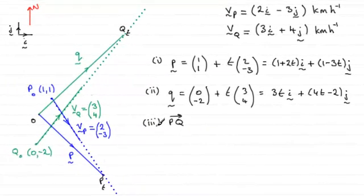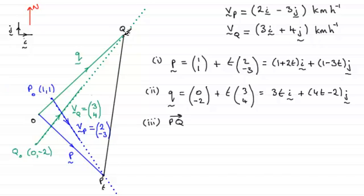Now for the third part of part b, we've got to find out the vector p to q. And we know where p was at time t, and we know that q was up here, say at time t. So we want to find out this vector up through here, p to q.